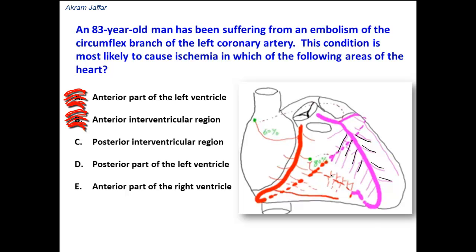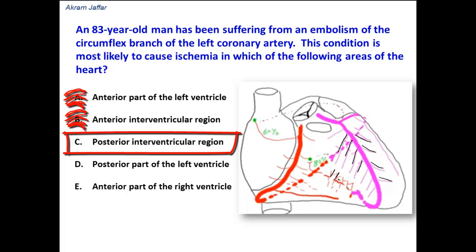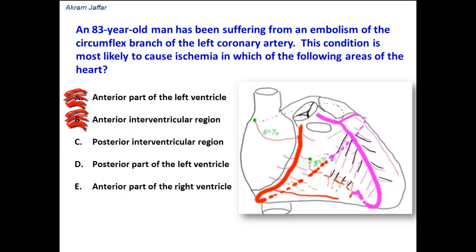Option C: The posterior interventricular region is usually supplied by branches from the posterior interventricular artery, which in most cases is a branch of the right coronary artery — in cases of right dominance or co-dominance. Rarely, it is a branch of the left coronary artery, in which case it would be a continuation of the circumflex branch of the left coronary artery.